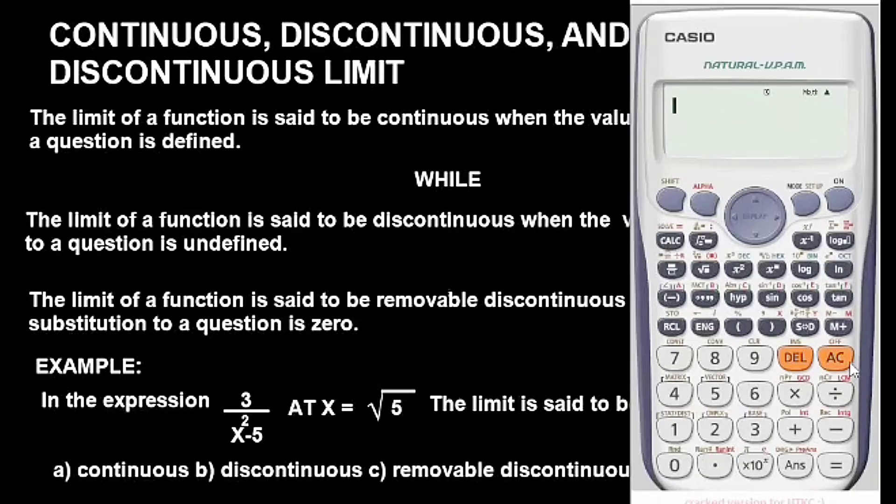We wipe it and input the expression as it is actually here in the calculator. It's in fraction form, so we use this button. We have three all over x squared minus five. To bring up x, press alpha first and then this button x. So we have x squared minus five. This is what we have in the question.